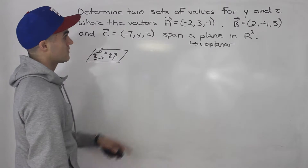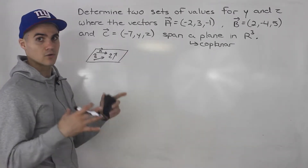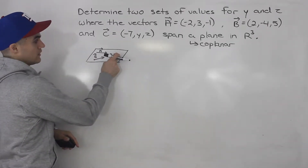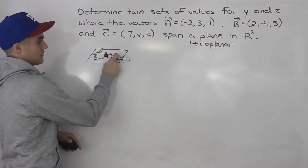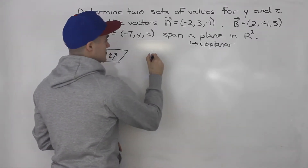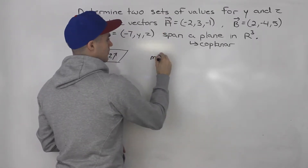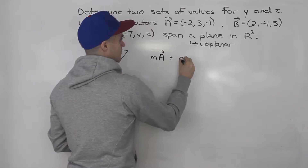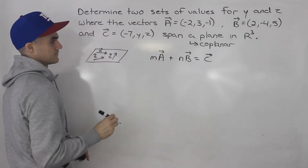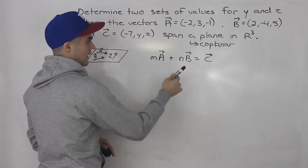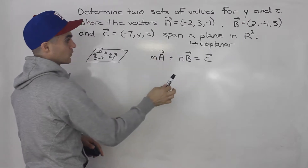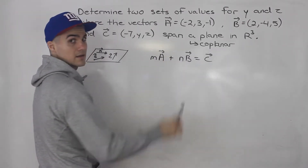Now, if you remember, if three vectors span a plane or they're coplanar — they lie on the same plane — then that means we can take one of the vectors, let's say vector c in this example, and write it as the linear combination of the other two. So we can take a constant m, multiply it by vector a, plus a constant n multiplied by vector b, and that would give us vector c. We could have written this in any other order — for example, m times a plus n times c equals vector b. Any order works; I just decided to go in alphabetical order.